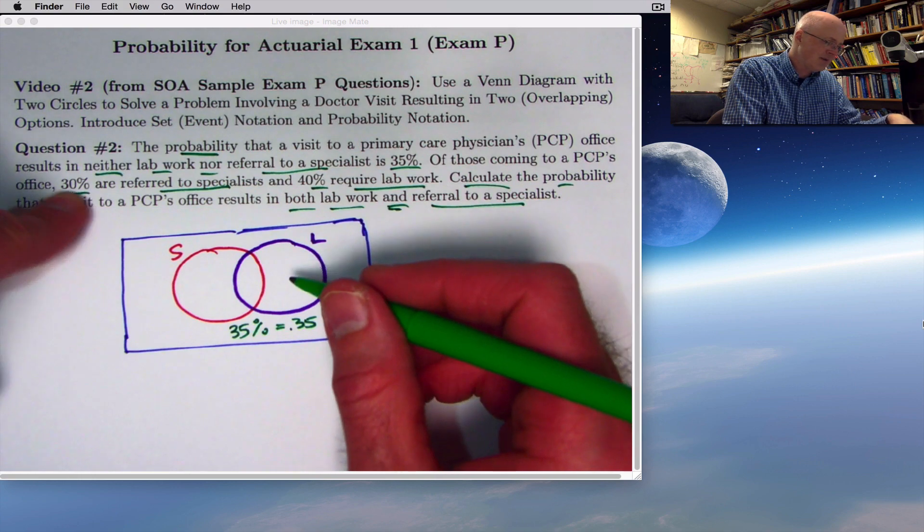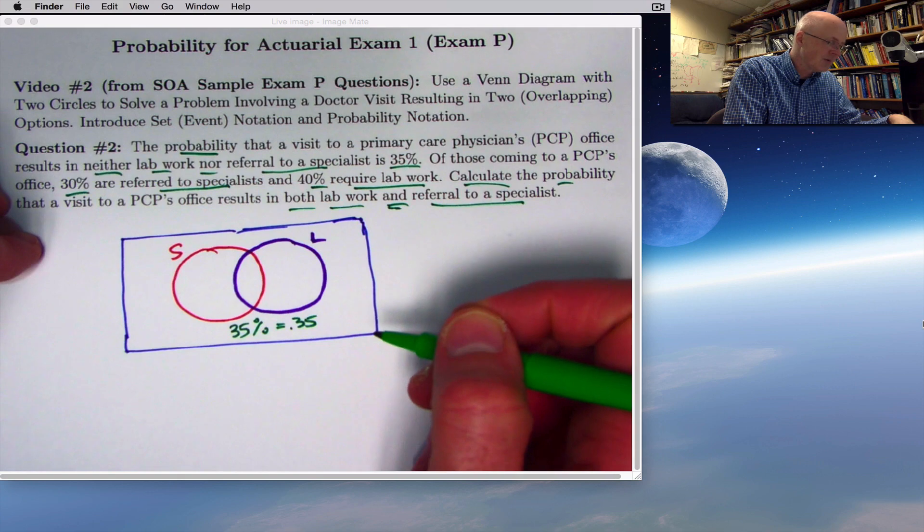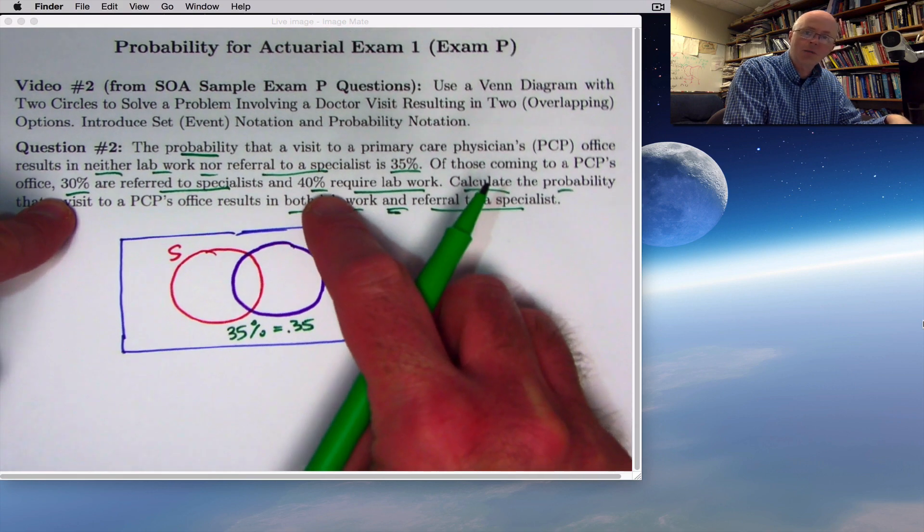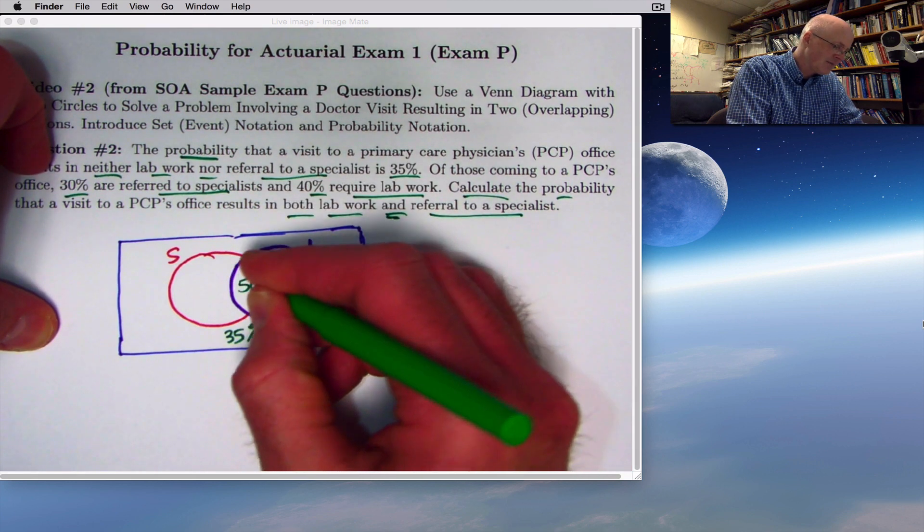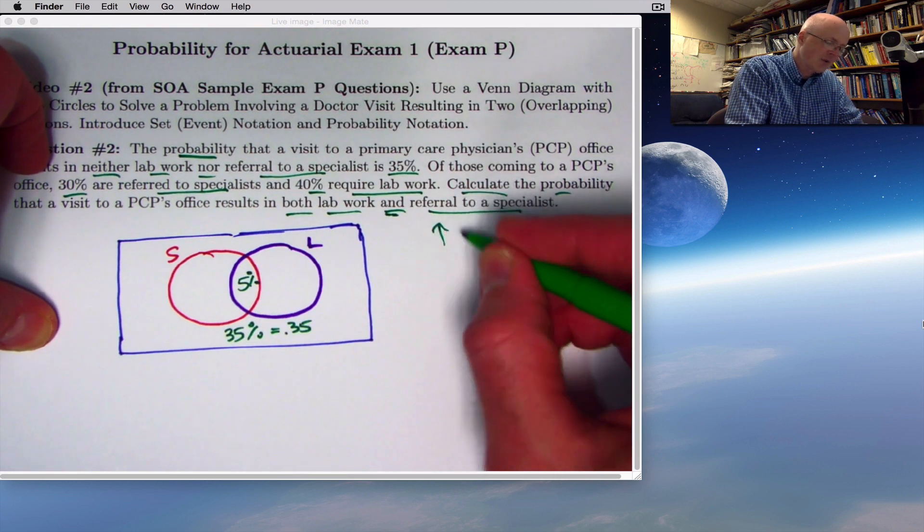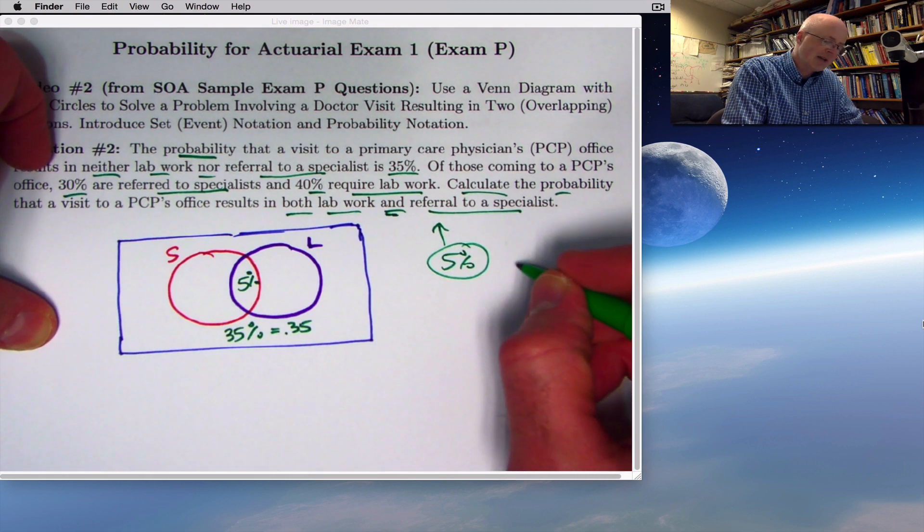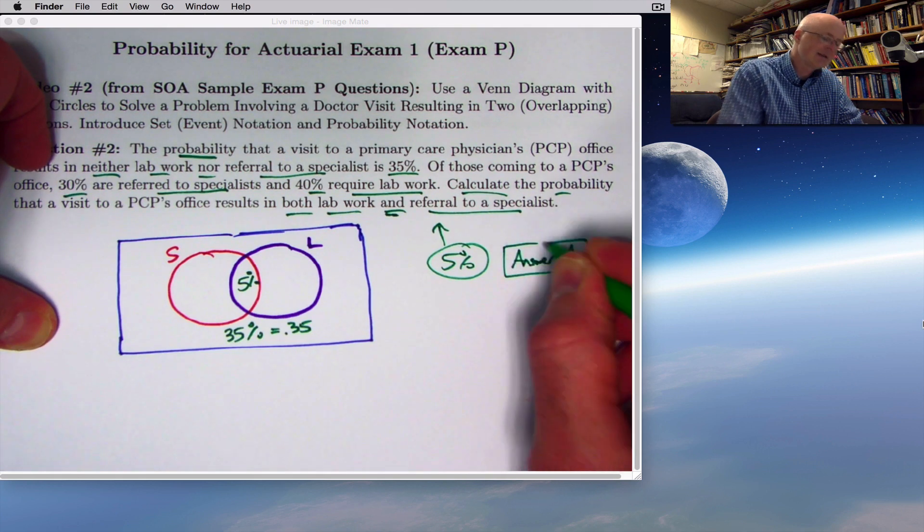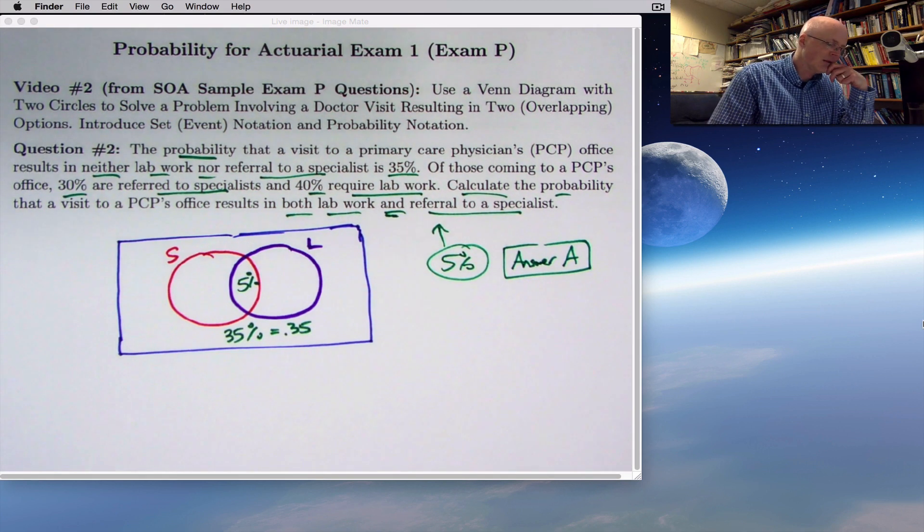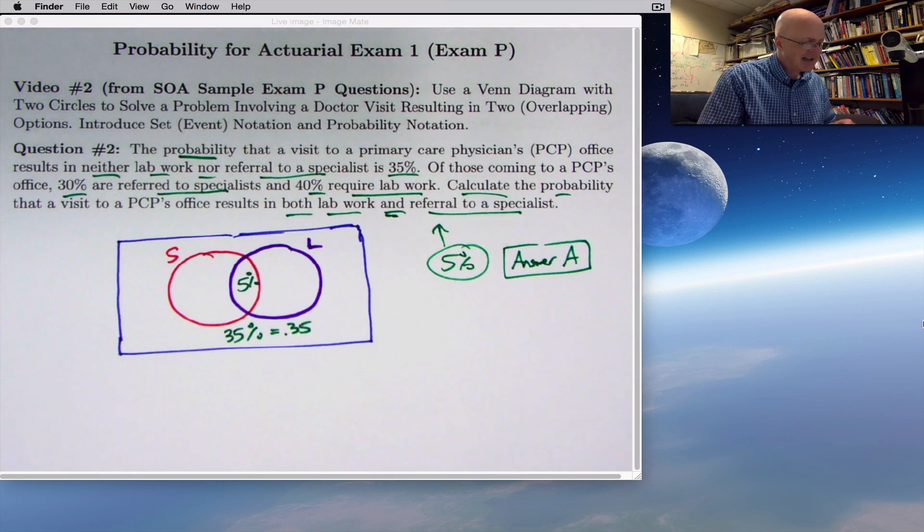Did you get that? 100 minus 35 or 65 have to be in these two circles combined. But because these two numbers add to 70, the answer must be 70 minus 65, 5%. The answer we have figured out very quickly is 5%. I believe this is answer A. If you look at the options on the sample P questions online, you can check. But the answer is 5%.